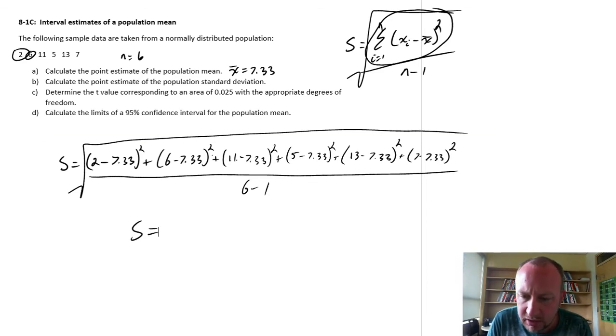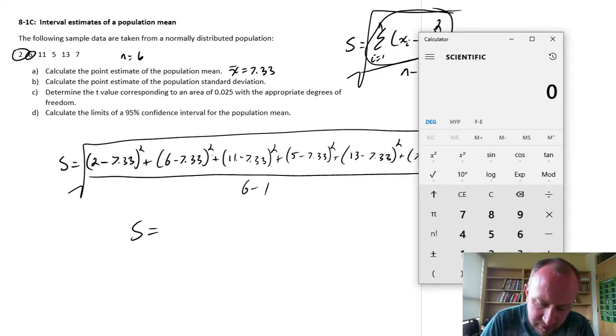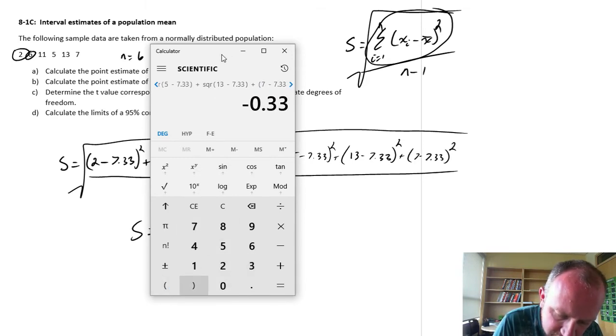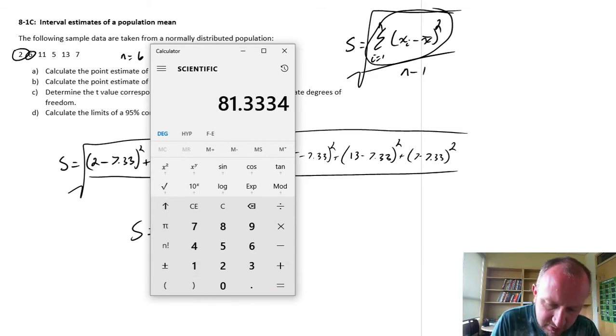So let's get going on these calculations. So open brackets, 2 minus 7.33 squared, plus 6 minus 7.33 squared, plus 11 minus 7.33, plus 5 minus 7.33, plus 13 minus 7.33, plus, I'm just going to move this over, for that last one.